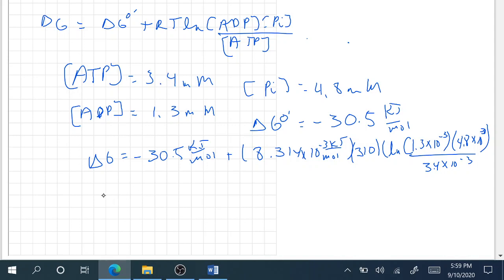Okay, so that gives us negative 30.5 plus 2.577734 ln of 1.835 times 10 to the negative third, equals negative 30.5 minus 16.24, equals negative 46.7 kilojoules per mole. All right, thanks for watching.